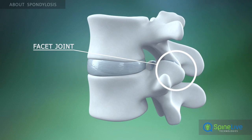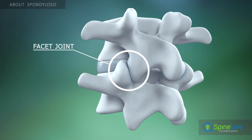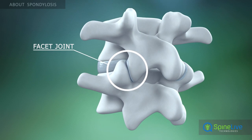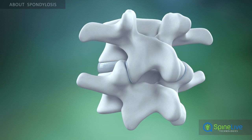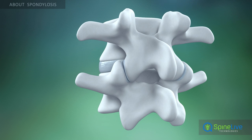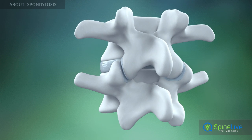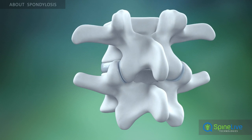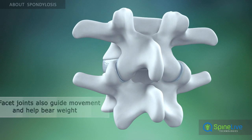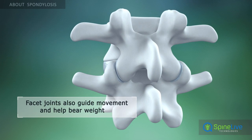Facet joints are located between each pair of vertebrae. They guide the movement of the spine, providing stability and bearing a share of the load of the spine.